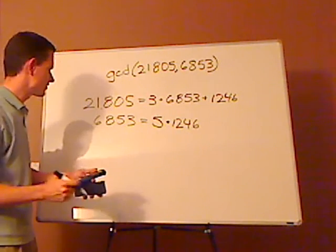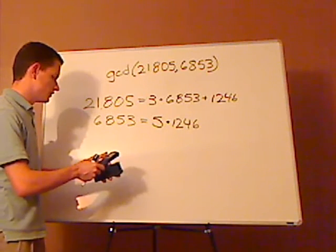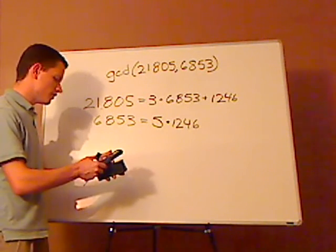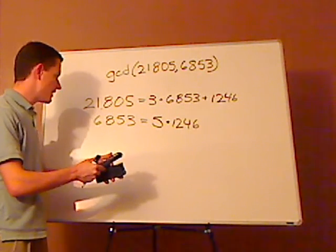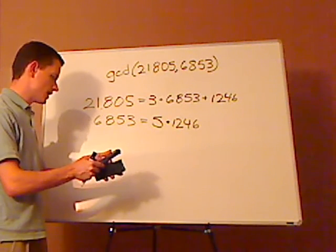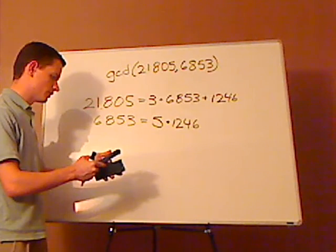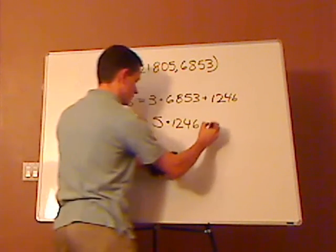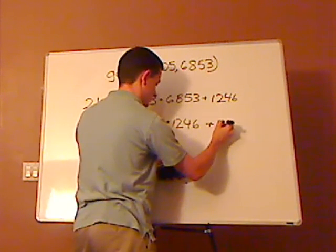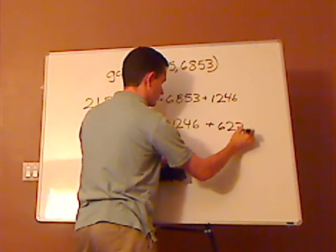And again, I'm going to type into my calculator to find the remainder. 6,853 minus 5 times 1,246. And the remainder turns out to be 623.